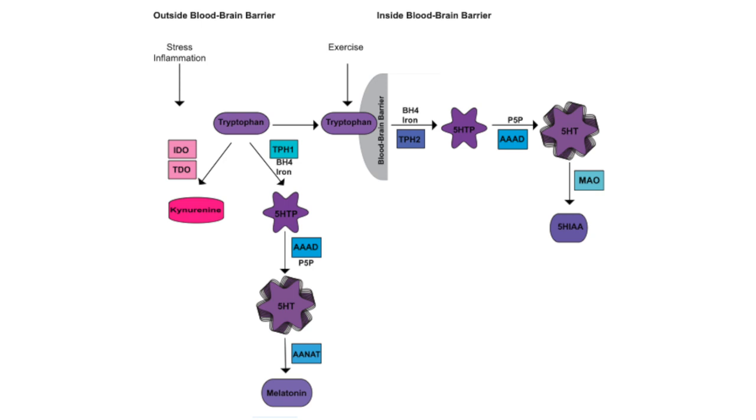So working backwards from melatonin in this diagram, the next thing up is 5-HT, which is serotonin. So that's known as the happy chemical in the brain. So we need serotonin in order to create melatonin.